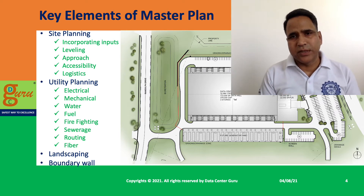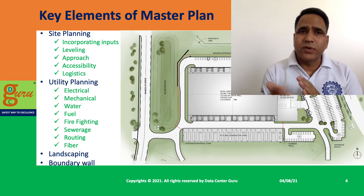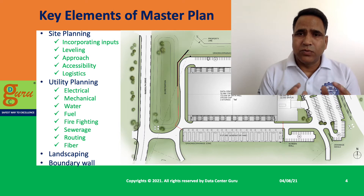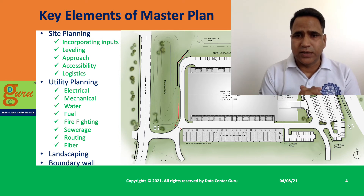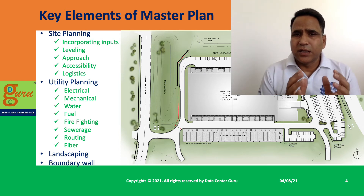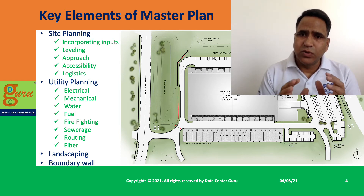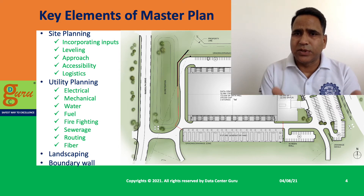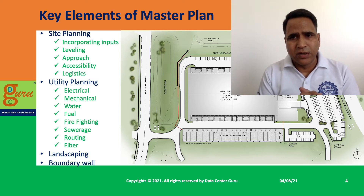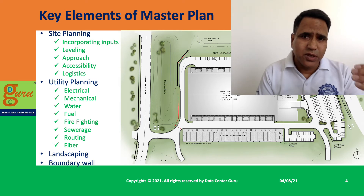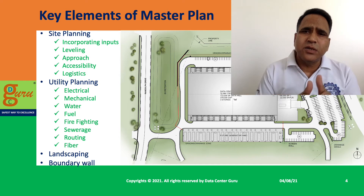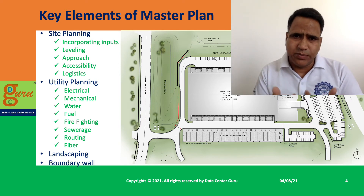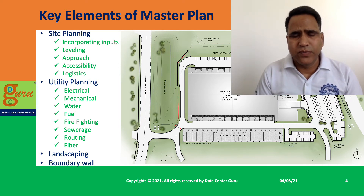Another aspect is landscaping - what part of the available land area will be landscaped and how you are going to do that. You also need to plan how you will create the boundary wall and how you will plan the space for setback of the building - how much space you should leave based on the building codes. These inputs also have to be considered. These are the different elements when you go to the site and start preparing the master plan of your data center.